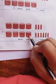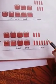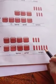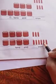Now next: one, two, three, four — four tens. And ones: one, two, three, four, five, six — four tens and six ones, becomes 46.